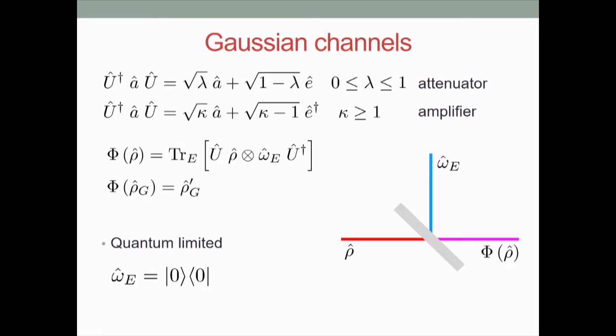Mathematically this beam splitter performs a mixing of the electric fields: the electric field in the output will be a linear combination of the electric fields of the two inputs. This is implemented by a unitary operator U that acts on the ladder operator. A is the ladder operator of the input system and E is the ladder operator of the environment; lambda goes from zero to one and is the transmission coefficient of the beam splitter. Mathematically, the channel takes the input state, appends the Gaussian quantum state of the environment, performs this unitary rotation implementing the beam splitter, and then traces out the environment output port.